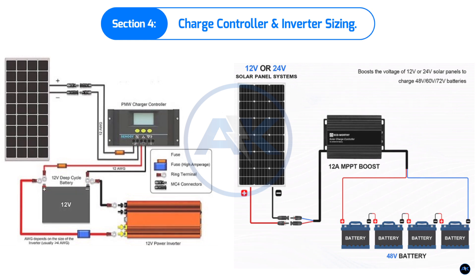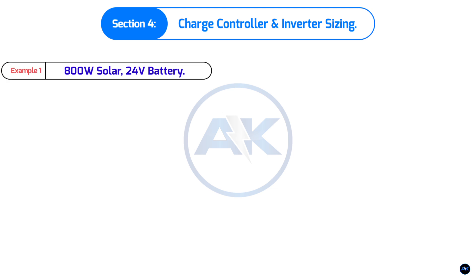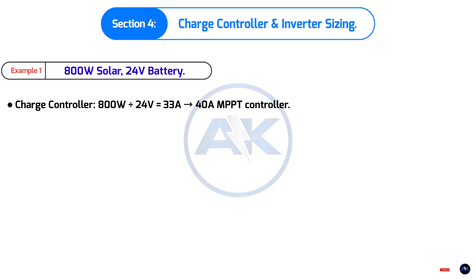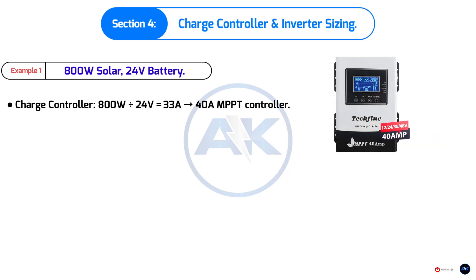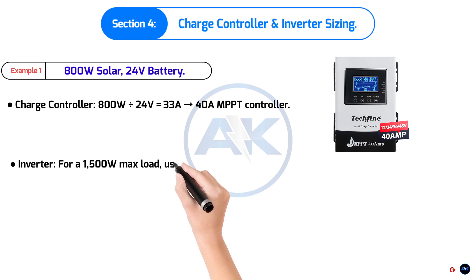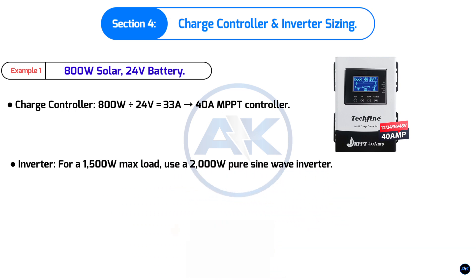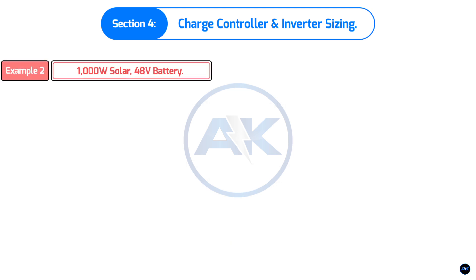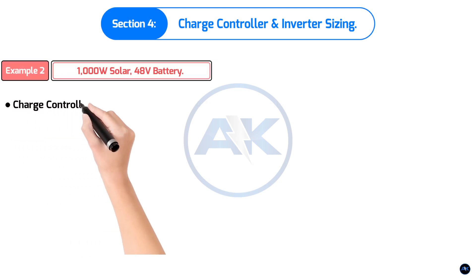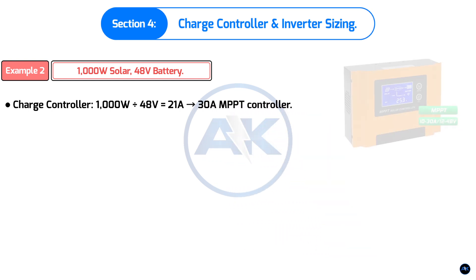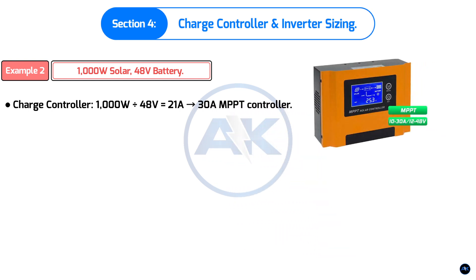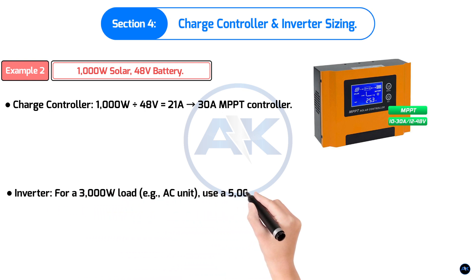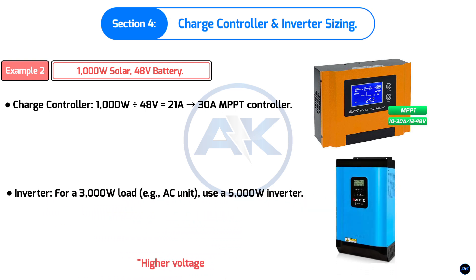Section 4: Charge controller and inverter sizing. Example 1: 800W solar, 24V battery. Charge controller: 800 ÷ 24 = 33 amps — use a 40A MPPT controller. Inverter for 1,500W max load: use a 2,000W pure sine wave inverter. Example 2: 1,000W solar, 48V battery. Charge controller: 1,000 ÷ 48 = 21 amps — use a 30A MPPT controller. Inverter for a 3,000W load (e.g., AC unit): use a 5,000W inverter. Higher voltage (48V) means thinner wires, lower costs, and better efficiency.